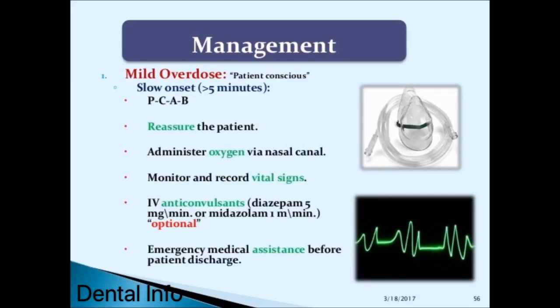Mild overdose, patient conscious, slow onset greater than 5 minutes: follow PCAB, reassure the patient, administer oxygen via nasal cannula, monitor and record vital signs, administer anticonvulsants—diazepam 5 mg/min or midazolam 1 mg/min if needed—and ensure emergency medical assistance before patient discharge.